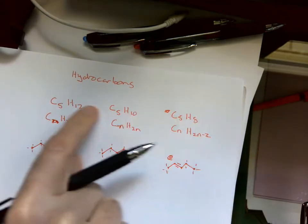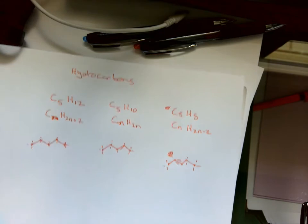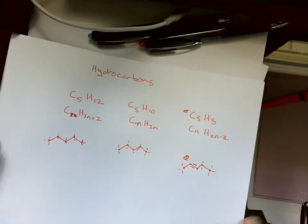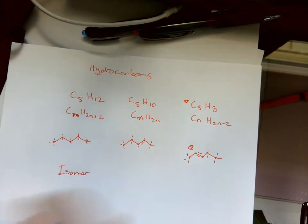So a quick way to see if you've got any single, double, or triple bonds is to use this formula or this set of formulas right here. Let's talk a little bit about isomers. The term iso means different and mer means molecule, so it's different forms of the same molecule.